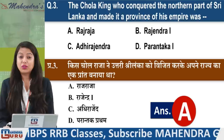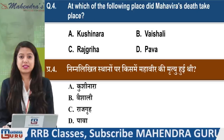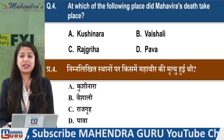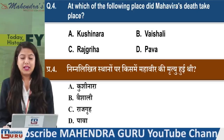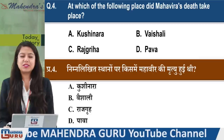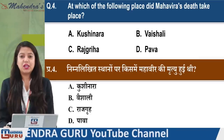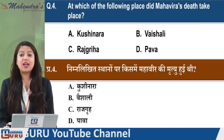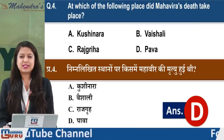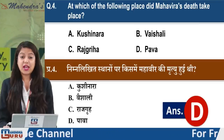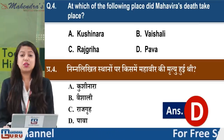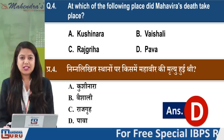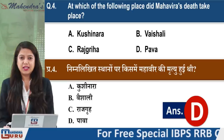Next question: At which of the following places did Mahavira's death take place? Options: Kushinara, Vaishali, Rajgriha, or Pava. This is an interesting question and the answer is option D - Pava.